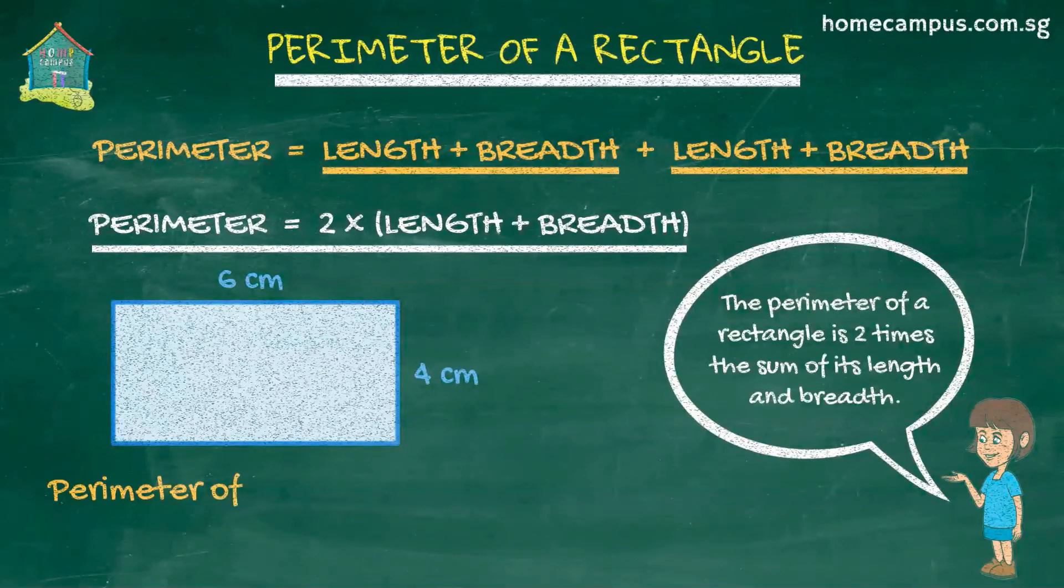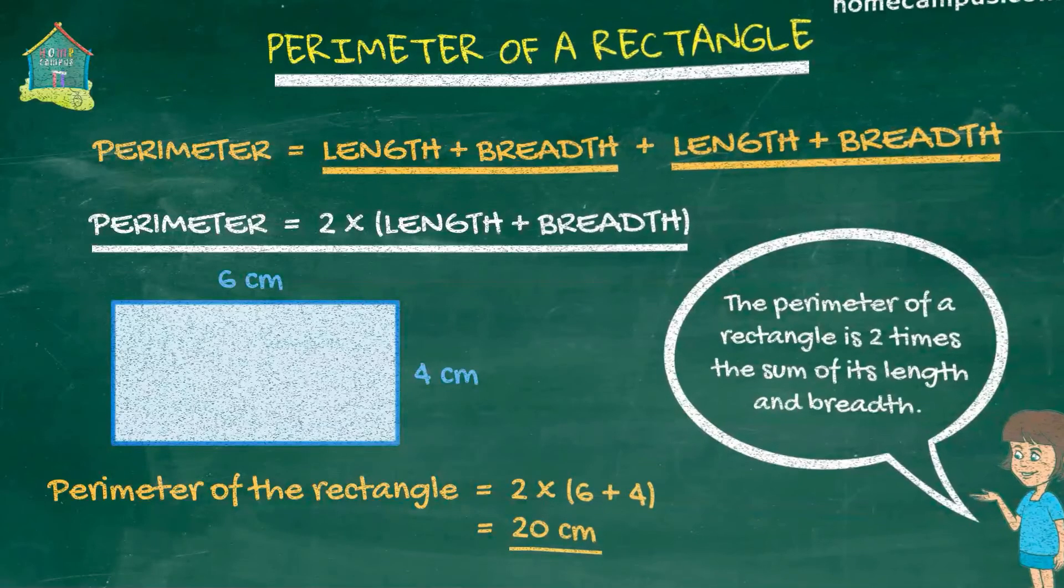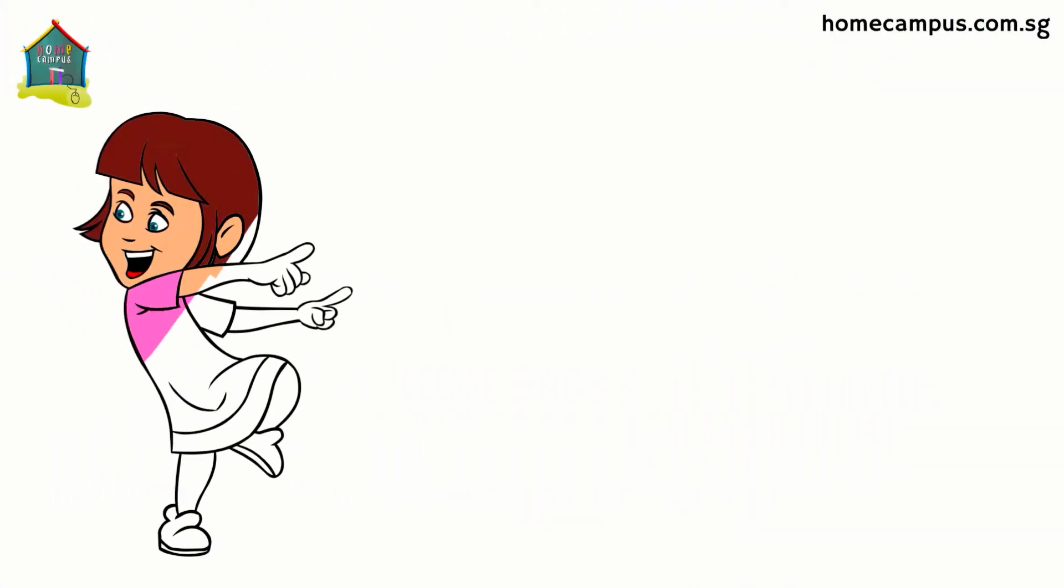Well, the perimeter of this rectangle would be two times six centimeters plus four centimeters, or 20 centimeters. So that's how easy it is to find the perimeter of a rectangle.